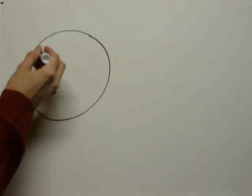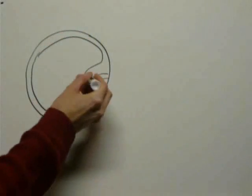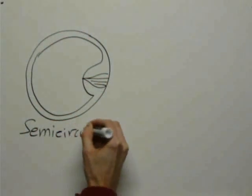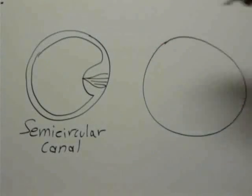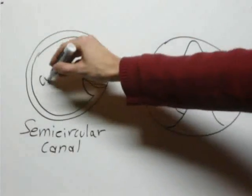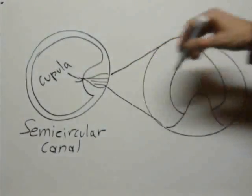Within your inner ear there are little tiny fluid-filled structures called semicircular canals. You can essentially think of them as very thin inner tubes with an enlarged bump on one side. Inside of this bump is a gelatinous structure called the cupula, which spans the inside of the tube.